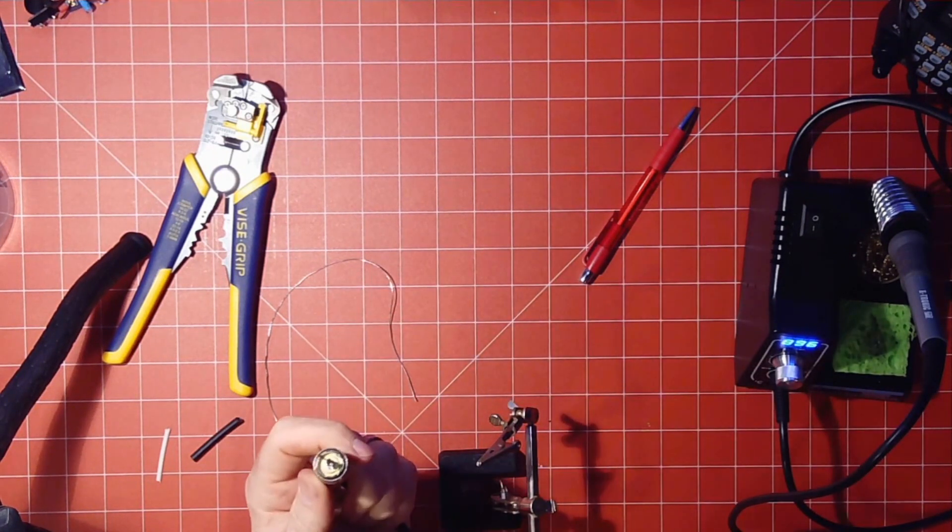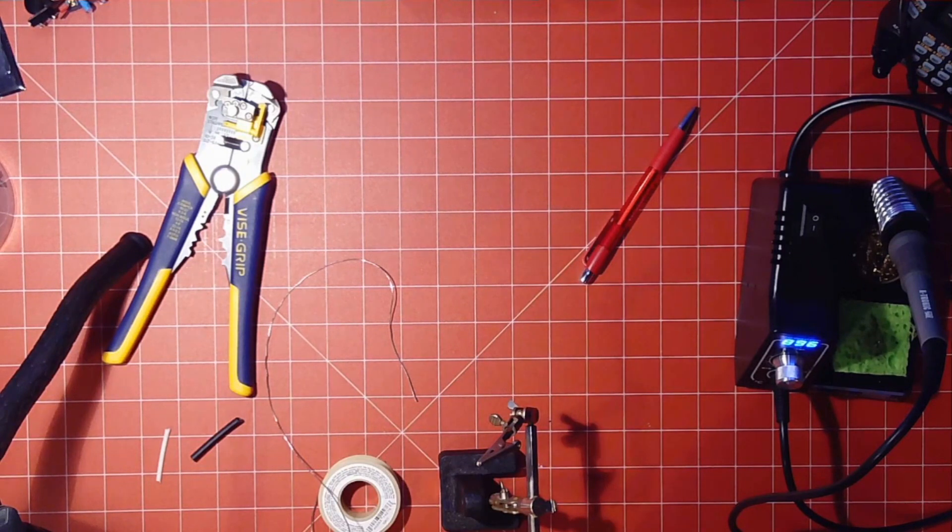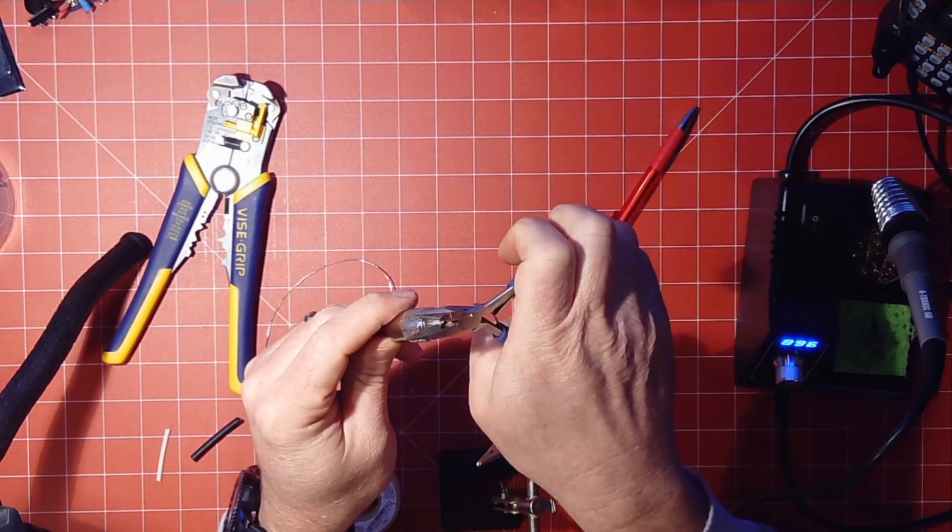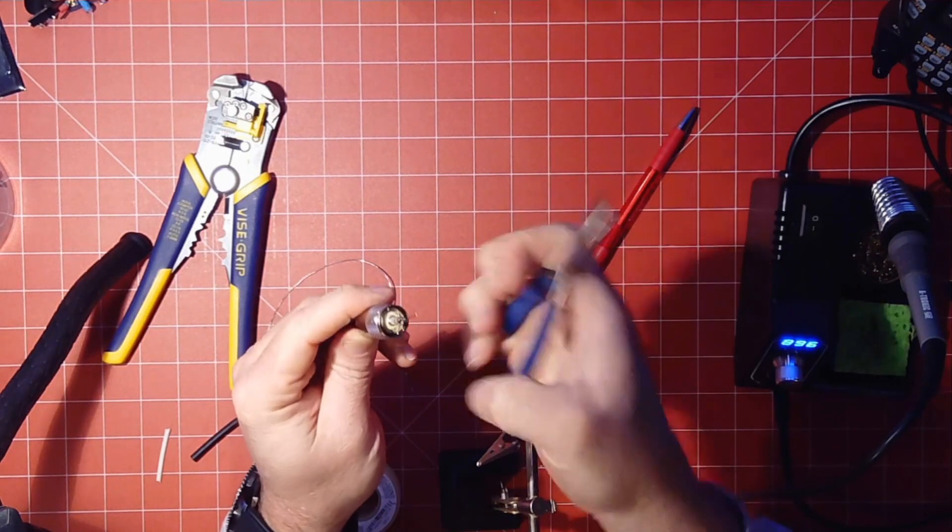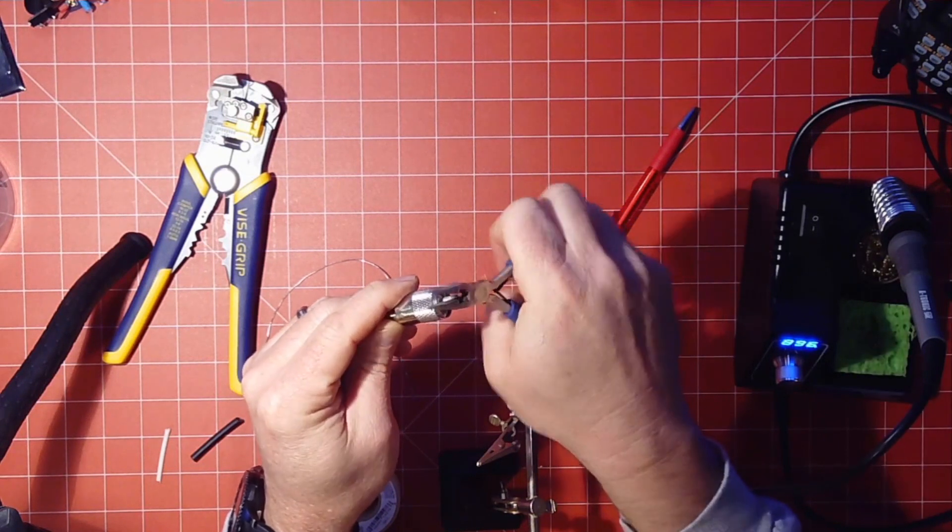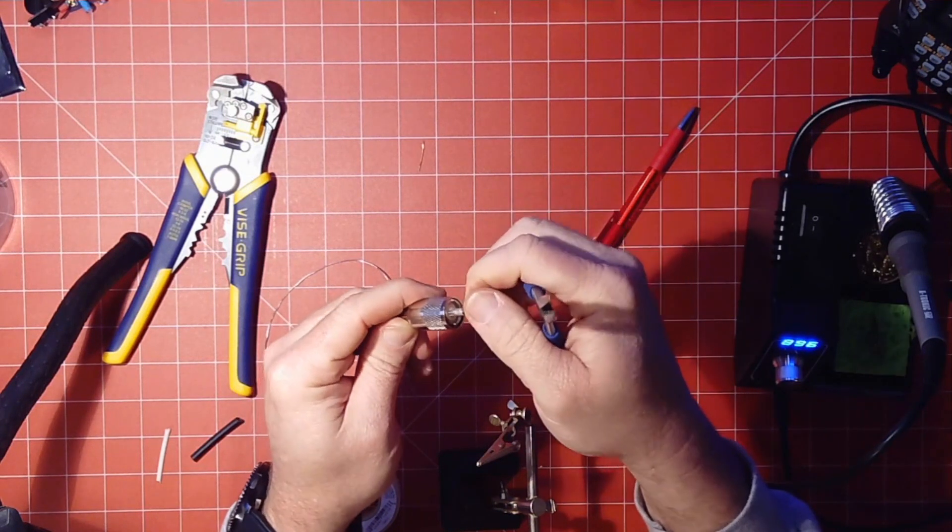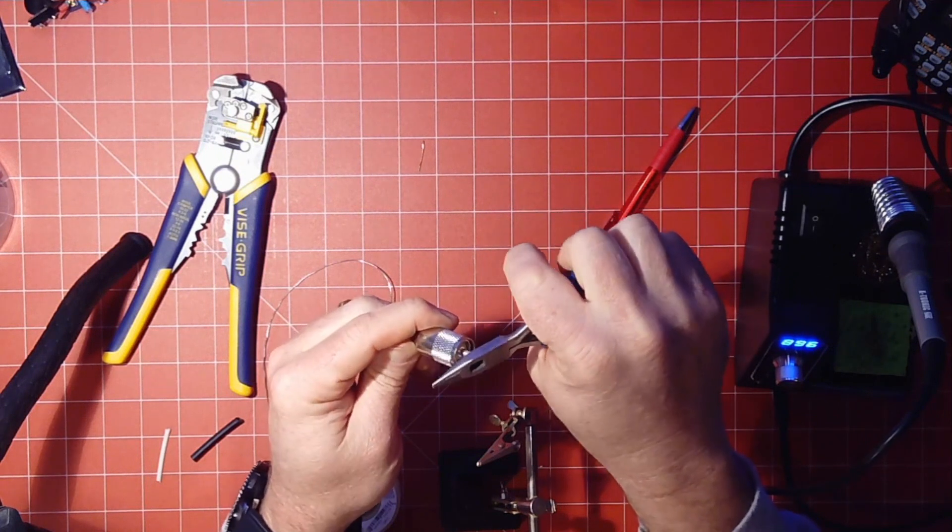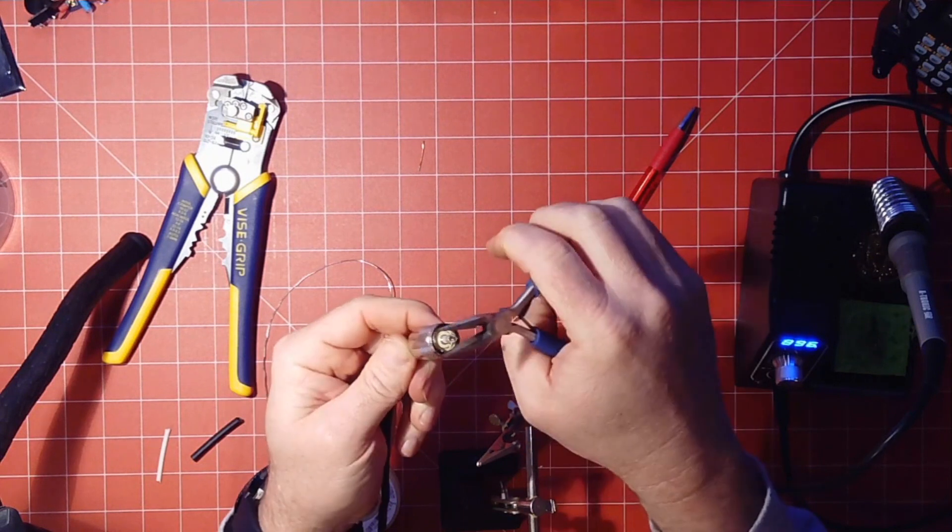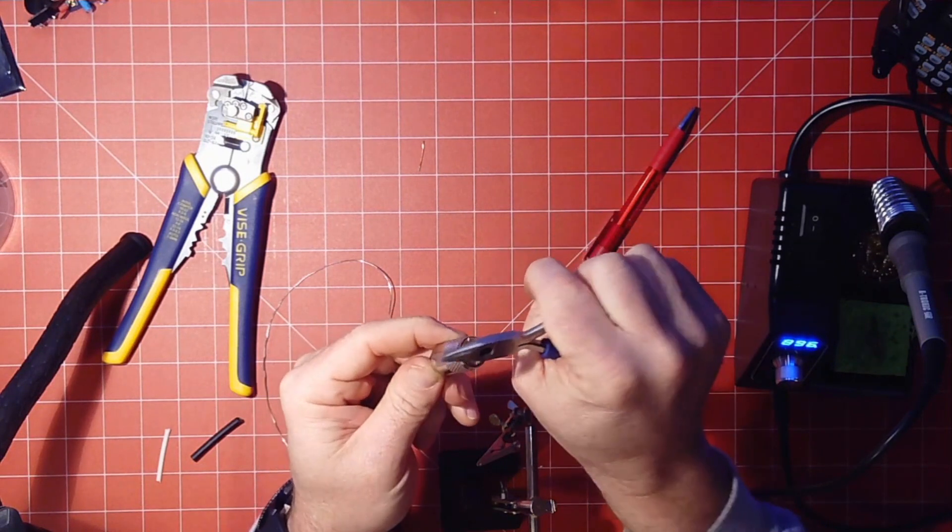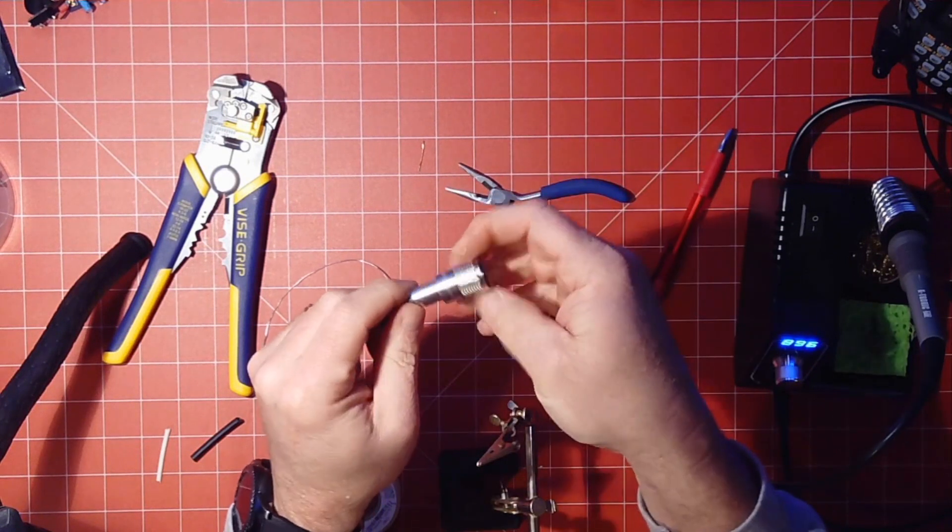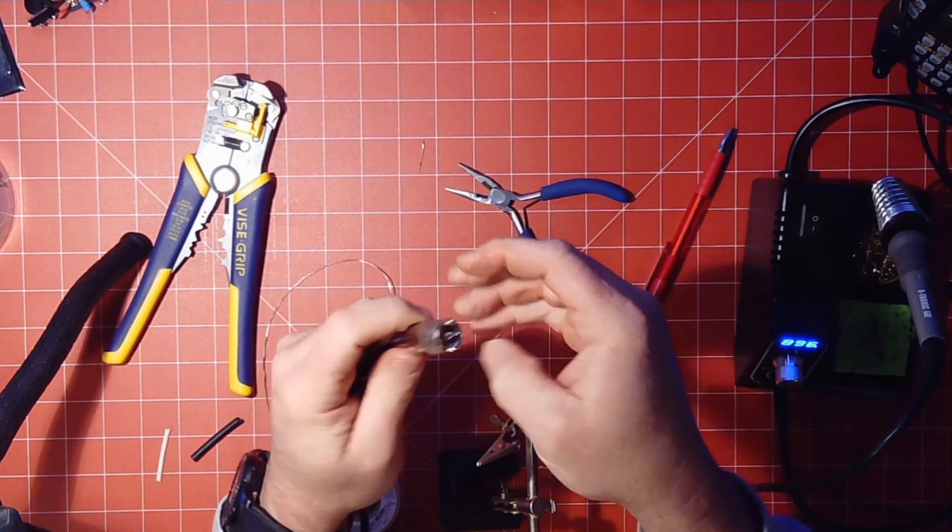And now let's take your pair of snips here. And we're going to snip that off. You want it flush. You don't want that little end sticking out of there. Alright, and that is how you install a PL259.